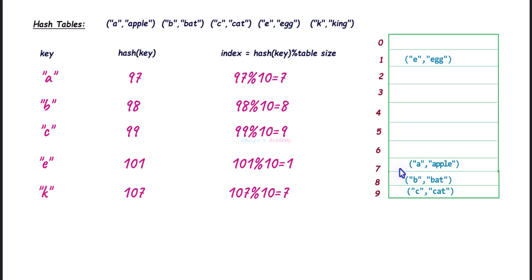Another method is open addressing. Open addressing is a collision resolution technique used in hash tables where, when a collision occurs, it tries to find another open slot in the hash table using a probing technique. In open addressing, it will not store multiple key-value pairs at the same index. Instead, it finds another empty slot to store the key-value pair.